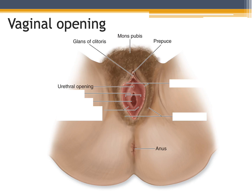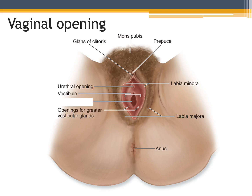Just posterior to the pubis, we will get the prepuce. The prepuce is a section of skin that will be covering most of the vestibule region. Just posterior to the prepuce, we will get the glans clitoris — at least the visible part of the clitoris. We will then get to the labia, which includes the labia majora and the labia minora. Internal to the labia minora, we will get the vestibule. In between the labia minora and the vestibule, we will get the vestibular glands. Central to the vestibule, we will see the vaginal orifice, or the opening to the vagina itself.